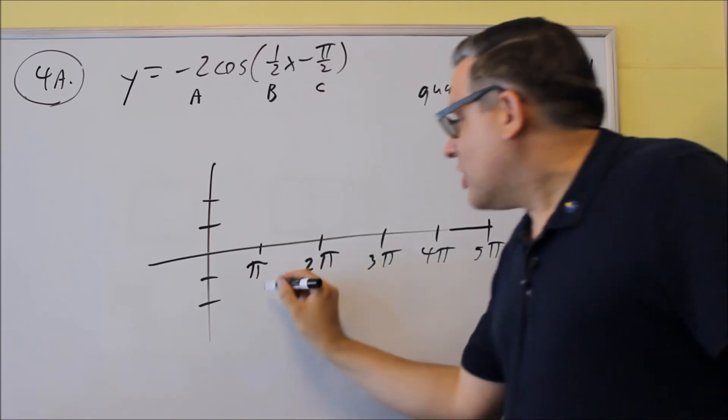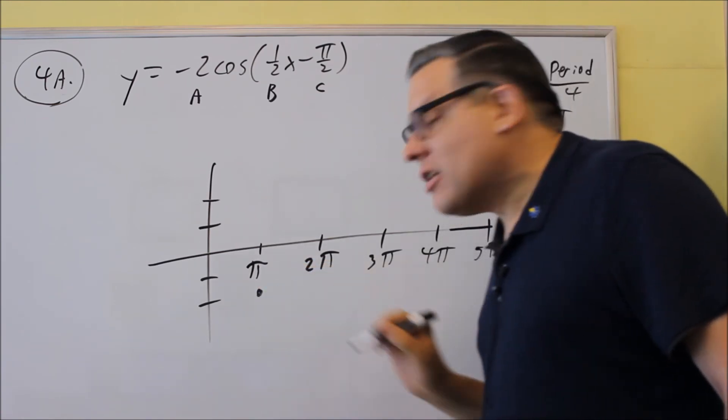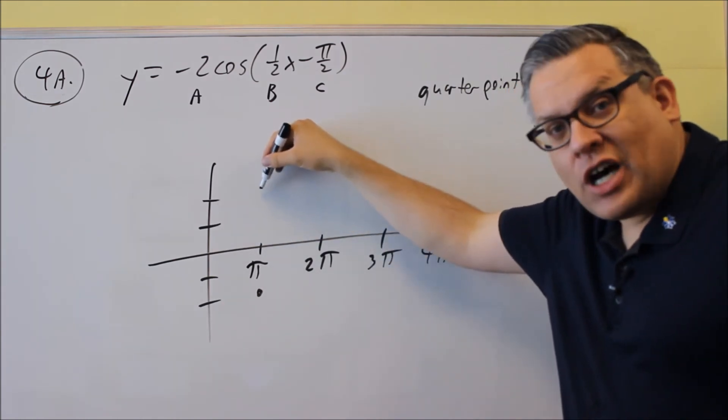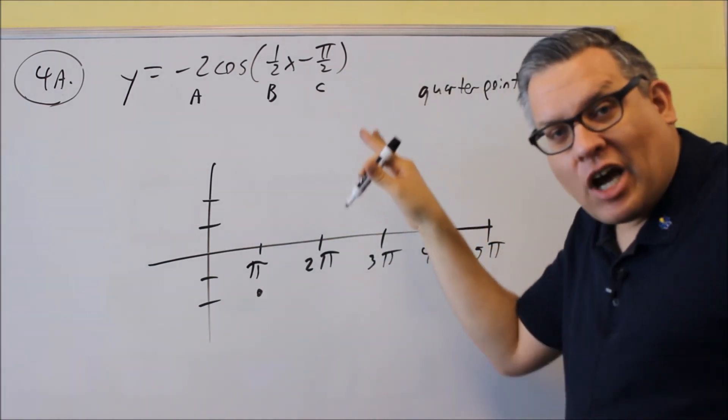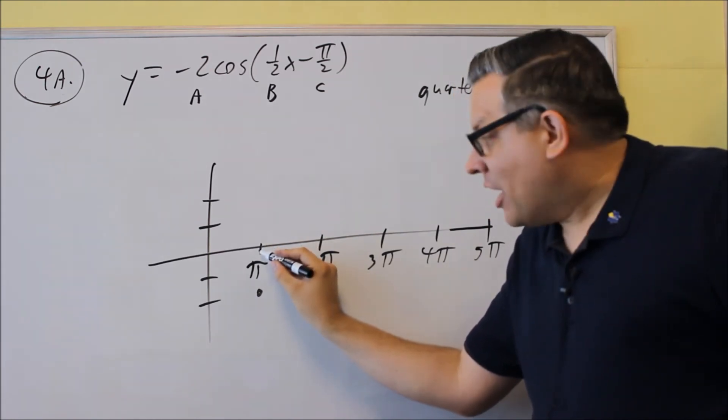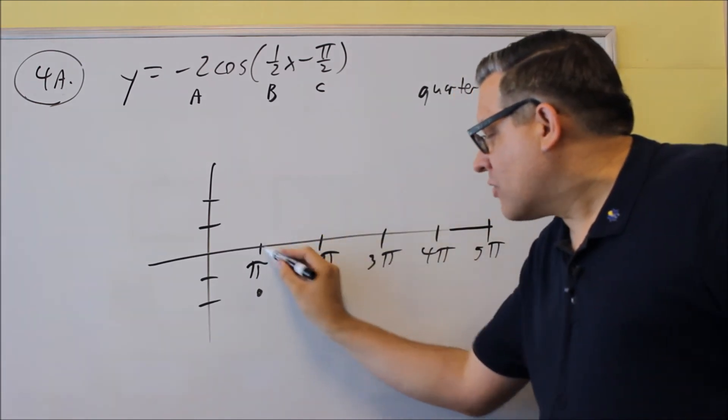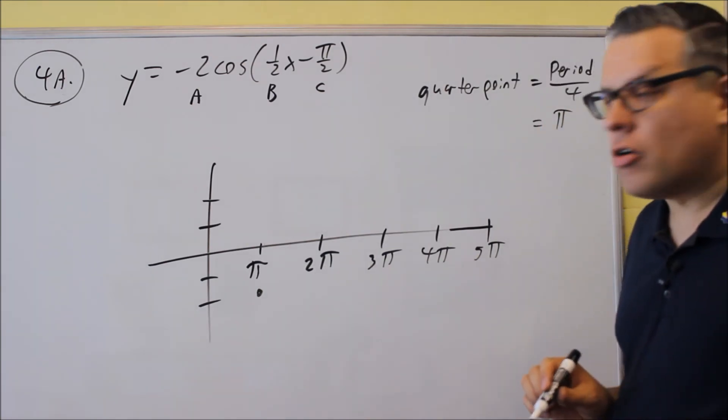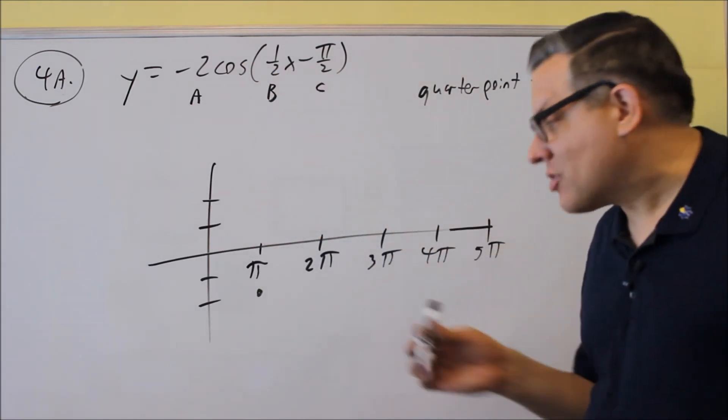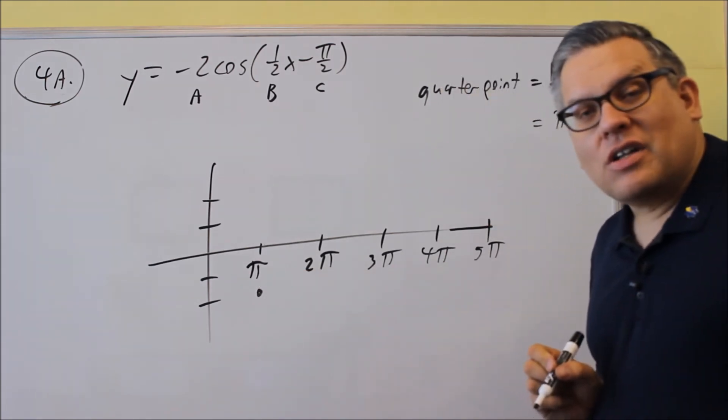So cosine is -2, it would be plotted down here. If this was a positive 2, you'd put a dot up here. If it's a sine graph, you start that on the x-axis. Okay, and if it's a positive sign, you'd go up, negative sign, you're going to go down. So you want to make sure you know where the starting point is for that, depending on which trig function you have. In this case, again, we're starting it down there at -2.